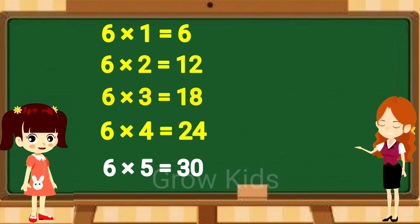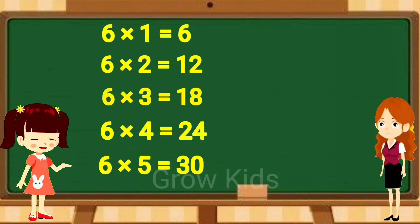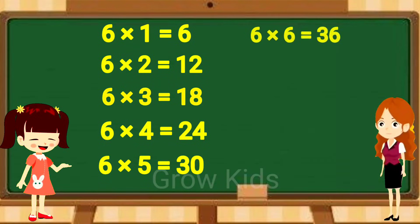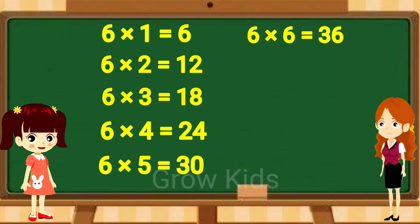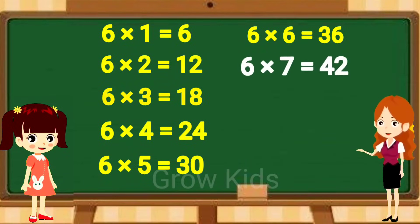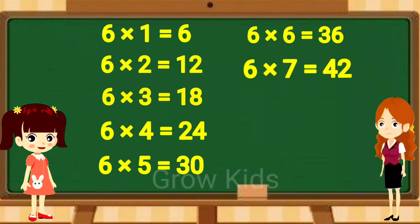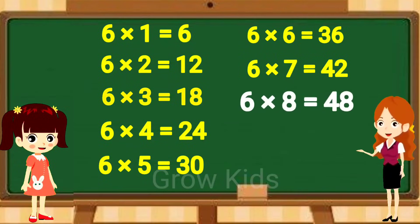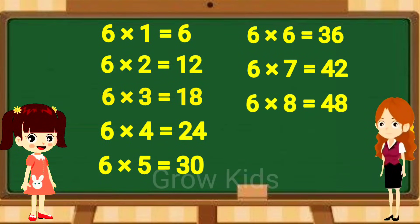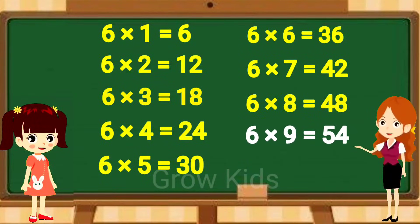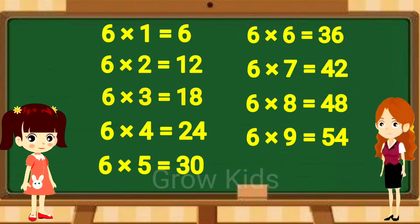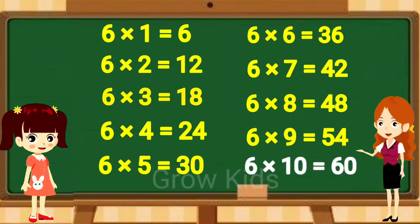Six fives are thirty. Six sixes are thirty-six. Six sevens are forty-two. Six eights are forty-eight.